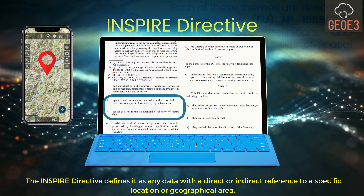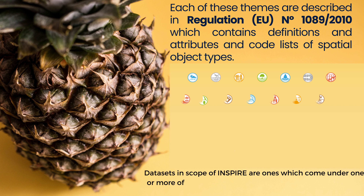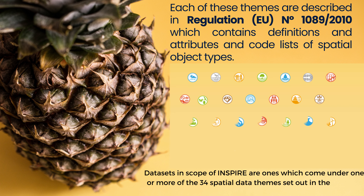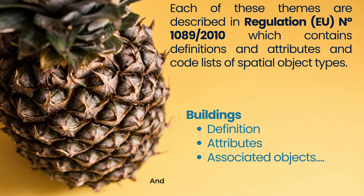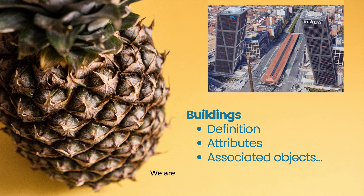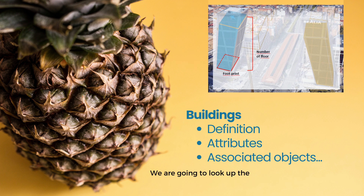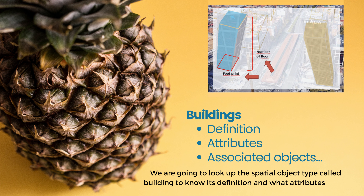Datasets in scope of Inspire are ones which come under one or more of the 34 spatial data themes set out in the Inspire Directive, and each one of these themes defines the spatial data types. For example, we are going to look up the spatial object type called Building to know its definition and what attributes it has.